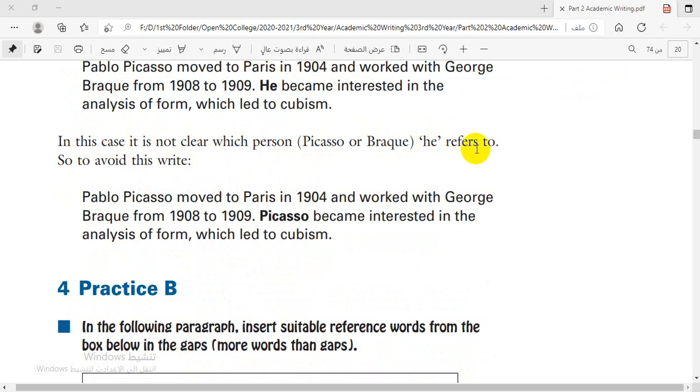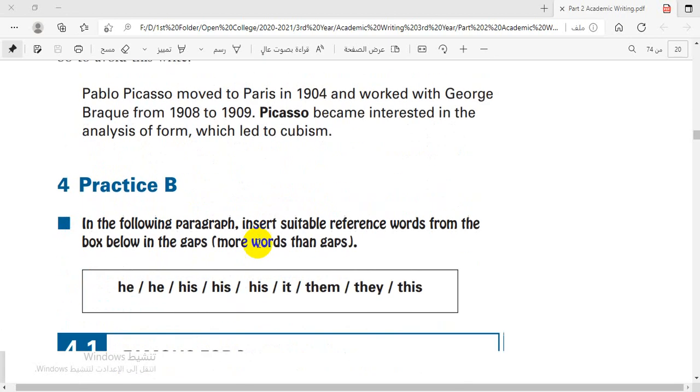So to avoid this, write: Pablo Picasso moved to Paris in 1904 and worked with George Braque from 1908 to 1909. Picasso became interested in the analysis of form which led to cubism. We are repeating the noun because we have two male nouns, so for that reason we use the word Picasso.